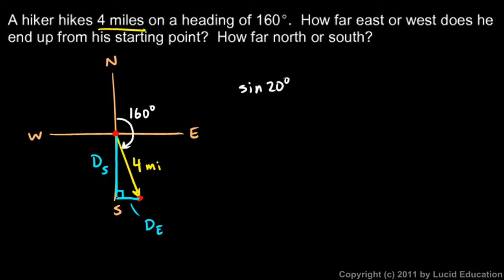So I can say sine of 20 degrees is equal to D_e over 4, and that's 4 miles. So then I can just solve that for D_e, just rearrange it algebraically. The distance east is 4 miles times the sine of 20 degrees. And you do that on the calculator and it comes out to be 1.4 miles. That's one of our answers.